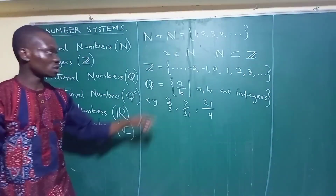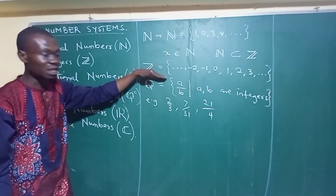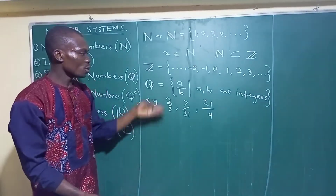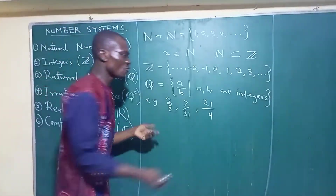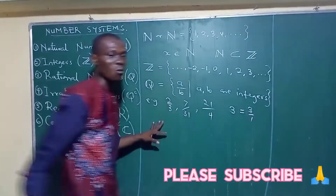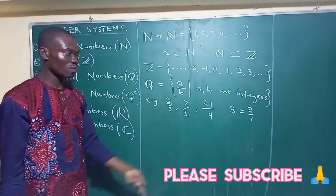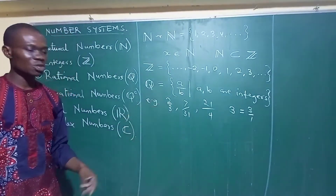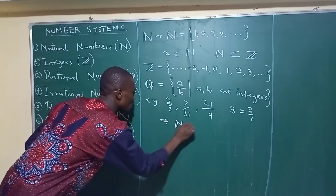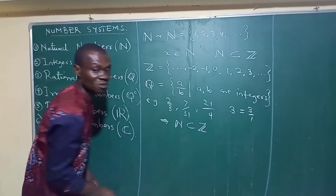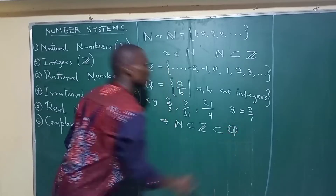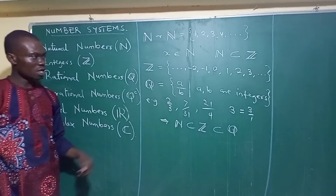Also note that all integers are also rational numbers, because you can represent any whole number as a fraction. For example, 3 is the same thing as 3 over 1, so it can be represented as a rational number. So every integer is actually a rational number. That is to say that N is a subset of Z, and Z is a subset of Q — the set of rational numbers. Please take note of that.